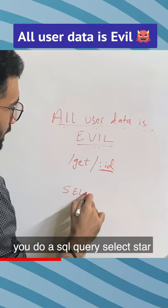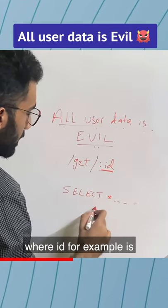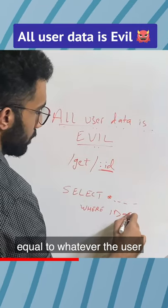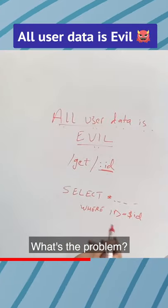Where you take this ID parameter and you do a SQL query like SELECT * FROM wherever you want WHERE ID is equal to whatever the user has entered. Now what are you doing here? What's the problem?